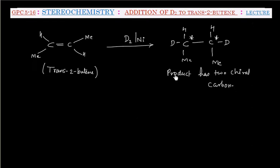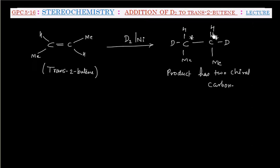Now we have to identify which isomer will be formed in this reaction. For these two chiral carbons, basically four isomers are possible in total. In this case we will have only three, because there will be one that has a plane of symmetry. These two carbons have the same kind of group attached, so in this case we will have three isomers total.